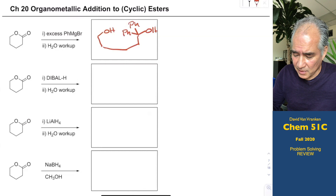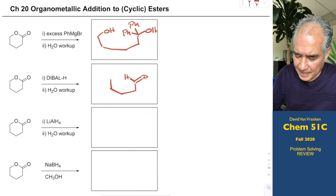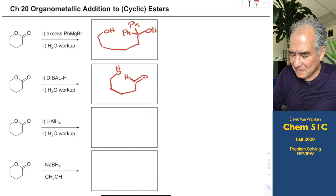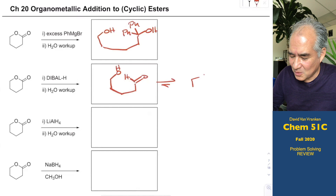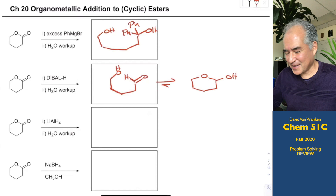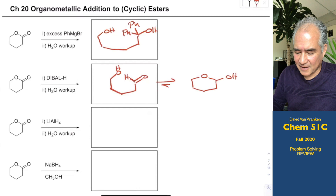When you take esters and reduce them with DIBAL, you get aldehydes — what a great reaction to give aldehydes. That would get full credit. But when you have hydroxy aldehydes, they prefer to be cyclized. The A-plus answer: the true product after working up this reaction will actually exist mostly — over 90% — as this cyclic pyranose in equilibrium. These particular five- and six-membered ring hydroxy aldehydes prefer to be cyclized.